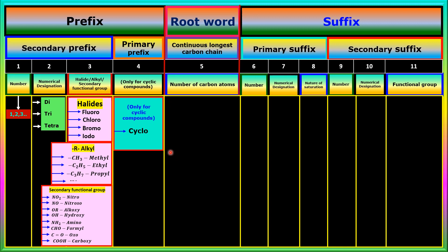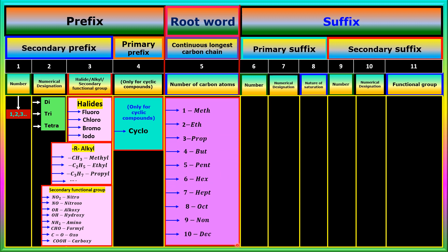There is only one primary prefix and it is used only for cyclic compounds — the name of the primary prefix is 'cyclo'. For compounds having ring structures, this primary prefix will be used. The root word is derived depending upon the number of carbon atoms present in the continuous longest carbon chain, known as the parent chain. If the parent chain contains one carbon atom, the root word is meth; two — eth; three — prop; then but, pent, hex, etc.